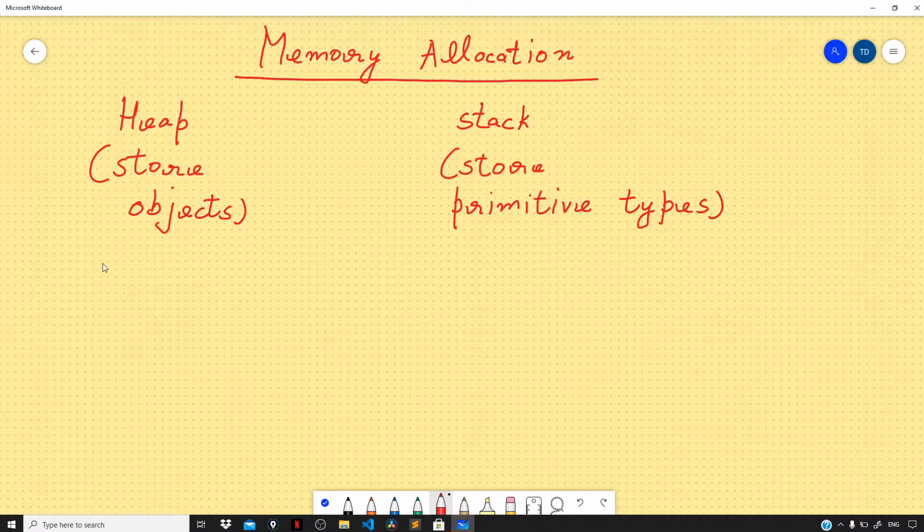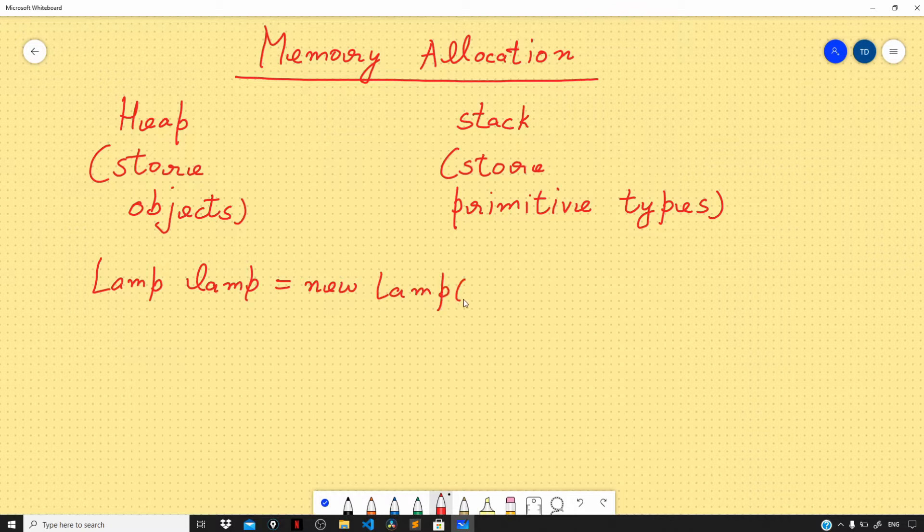When we say 'Lamp lamp equals new Lamp,' this right side part creates a new object on the heap. Let's say the address of this object on the heap is 0x100, so this is present on the heap.